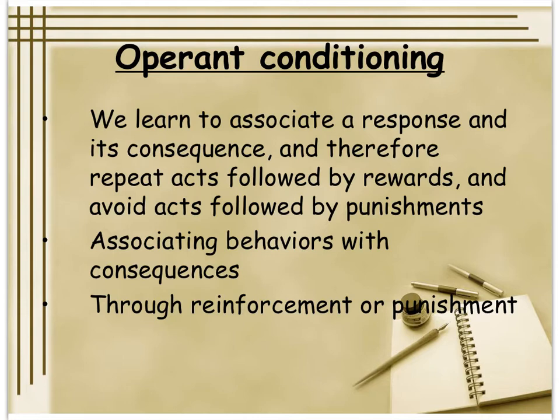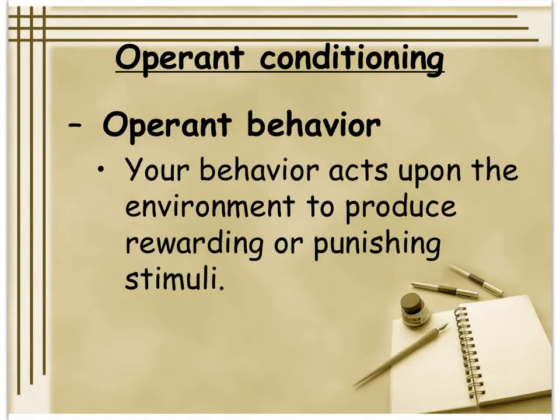You associate your behavior with a consequence. If you like the consequence, you're more likely to do it again; if you don't like the consequence, you're less likely to do it again. That's it — and it really is that simple. Operant behavior means your behavior acts upon the environment to produce things that are rewarding or punishing.